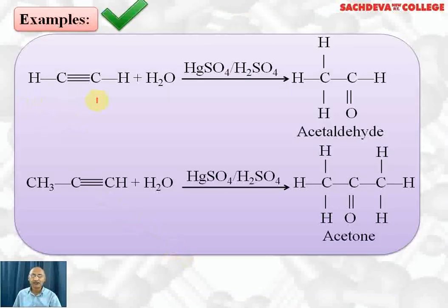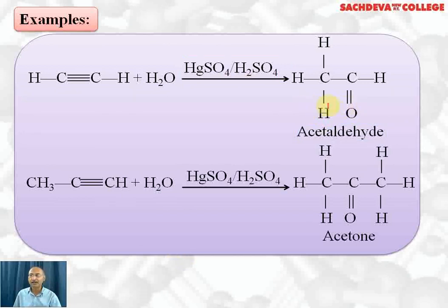As an example: acetylene reacts with water in the presence of H₂SO₄ and HgSO₄, first forming the enol form, which ultimately gives acetaldehyde. Alternatively, you can add water once to get the enol intermediate, then add water again and remove water from the carbon bearing two OH groups to get the aldehyde. Both methods give the same product — use whichever is easier. Converting the enol form to the keto form is simpler; alternatively, add water twice and remove water from the geminal diol to get the aldehyde.